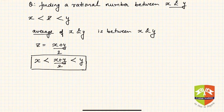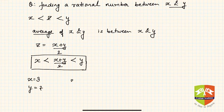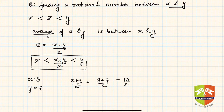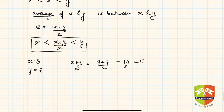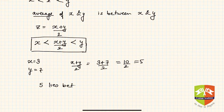For example, if x is 3 and y is 7, then x plus y by 2 is 3 plus 7 by 2, which is 10 upon 2, which is 5. So 5 lies between 3 and 7.